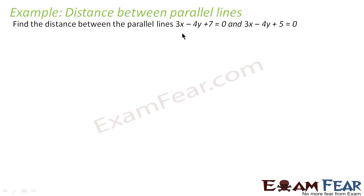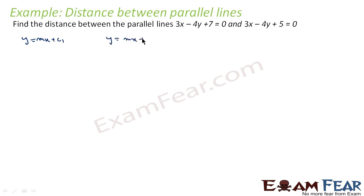In this example, we have to find the distance between two parallel lines: 3x − 4y + 7 = 0 and 3x − 4y + 5 = 0. We can convert these lines into y = mx + c form, because we know that if the two lines are y = mx + c1 and y = mx + c2, then distance = |c1 − c2| / √(1 + m²). This formula we know.